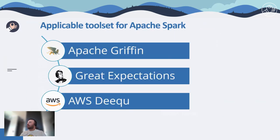You can build your own data quality approach from scratch. However, regardless of your architecture, it is going to be the most inefficient and most time-costly option. In terms of tool options, these three are the most common and mature ones, having the capability of running on Apache Spark seamlessly. I'm going to compare them in the following slides.